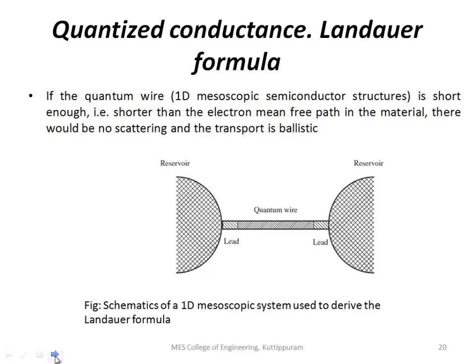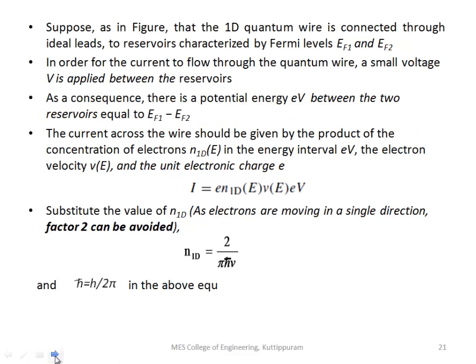The two reservoirs each have a Fermi level: Ef1 and Ef2. A voltage should be applied between those two reservoirs. The potential energy eV is equal to Ef1 minus Ef2. The current flow will be equal to e into n1D times v(E) times eV, where e is the electron charge, n1D is the electron concentration, and v(E) is the electron velocity, and V is the voltage.